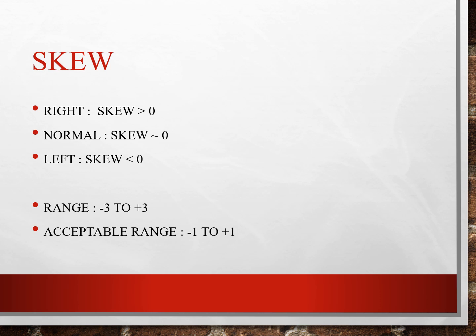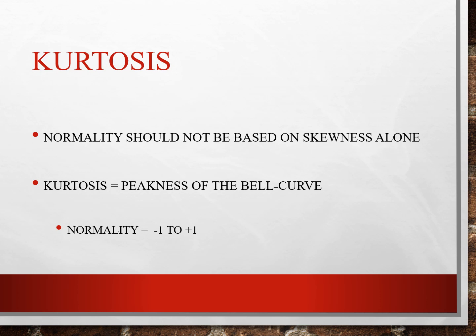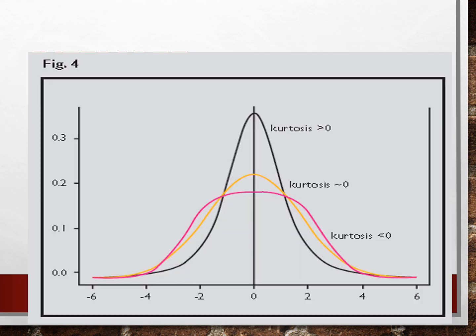Regarding skew — right or left skew — skewness of data would mean right skewness is greater than zero, normal is zero, and left is less than zero, with a usual range of standard deviation of minus 3 to plus 3, and acceptable range of minus 1 to plus 1. Kurtosis — normality should not be assessed on skewness alone. Kurtosis is the peakness of the bell curve, and usual normality is negative 1 to positive 1. Your peaked kurtosis is greater than zero, and your flattened kurtosis is less than zero.